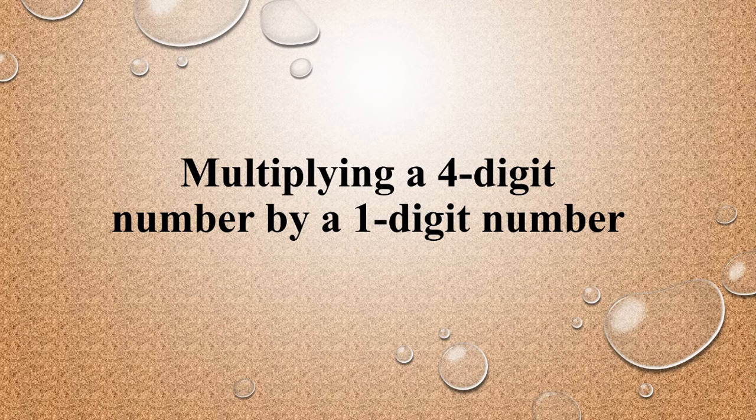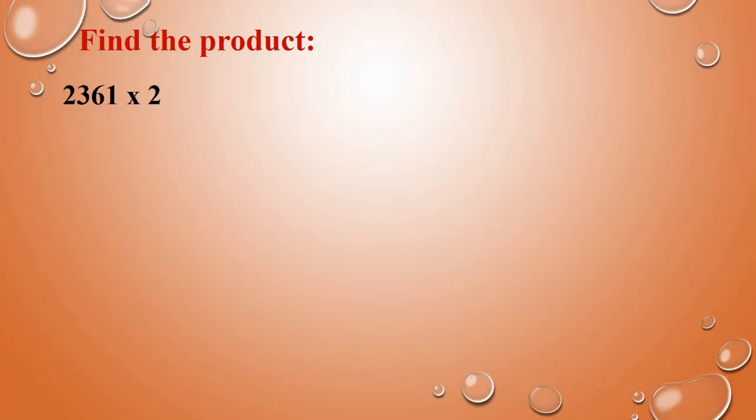The next topic is multiplying a 4-digit number by a 1-digit number. We are going to see how to multiply a 4-digit number. Find the product: 2361 into 2. Now we are going to multiply this number.